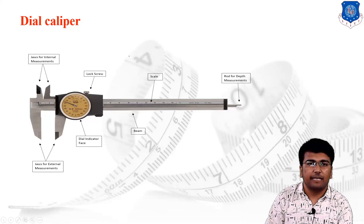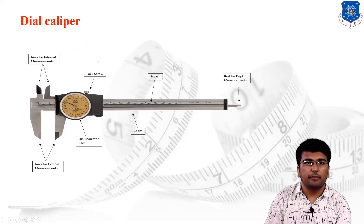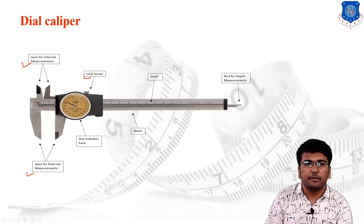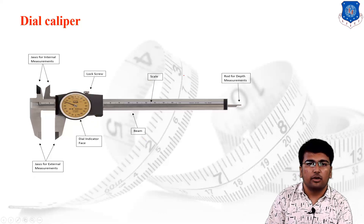The next type is the dial caliper. Instead of using the conventional auxiliary scale, a dial is used for measurement. If you need higher accuracy than the conventional vernier caliper, you use the dial caliper. The same elements are present: jaws for internal measurement, jaws for external measurement, a locking screw to lock the auxiliary scale over the main scale, a scale reading beam, and a depth measuring instrument. The change is that the auxiliary scale has been replaced by a dial.